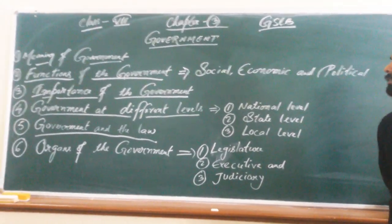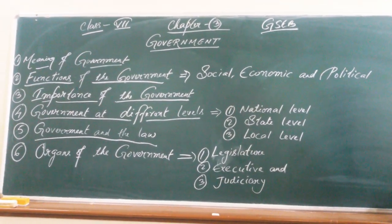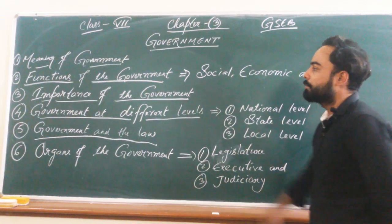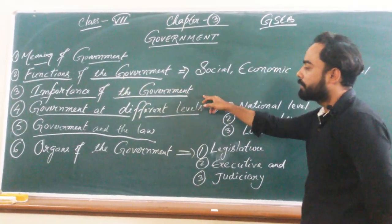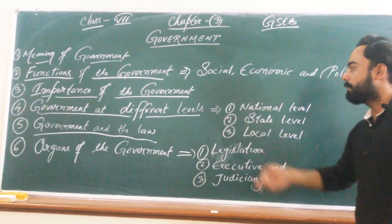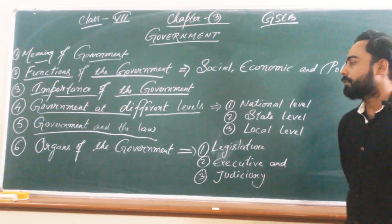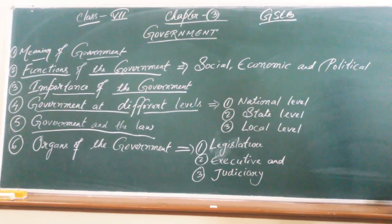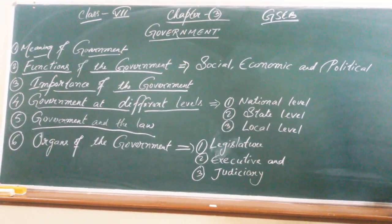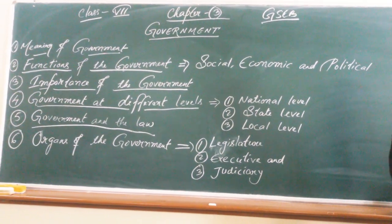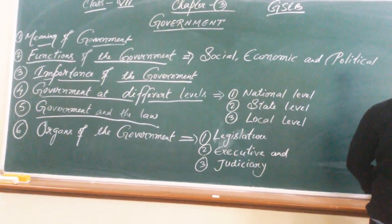So this is some of the information related to government, in which we have studied the meaning of government, functions of the government, importance of the government, government at different levels — national, state, and local — the government and the law, and the organs of the government: legislature, executive, and judiciary. In the next class, we will study chapter number four. Thank you.